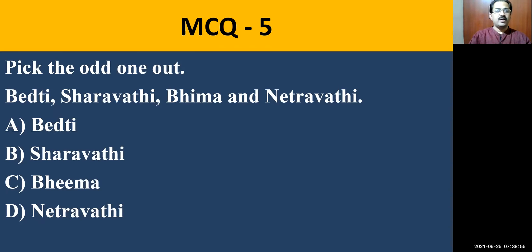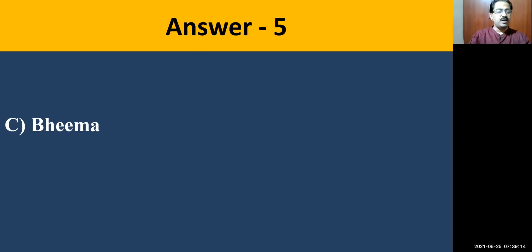MCQ question number five: Pick the odd one out — Berthi, Sharavati, Bhima, and Netravati. You need to remove Bhima, because Bhima is a tributary of River Krishna. The rest — Berthi, Sharavati, and Netravati — all flow westward and join the Arabian Sea, whereas Bhima joins Krishna, which along with Krishna joins the Bay of Bengal.